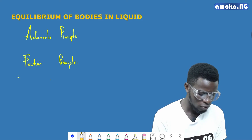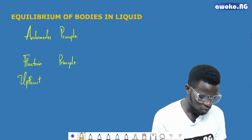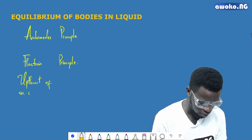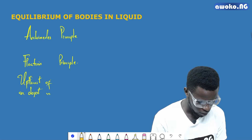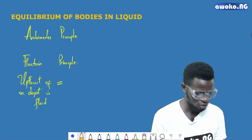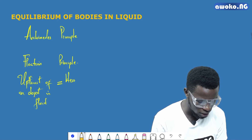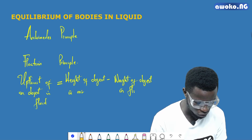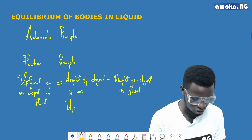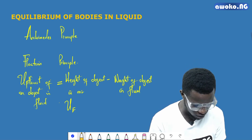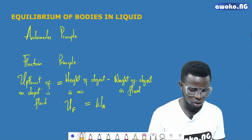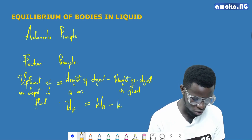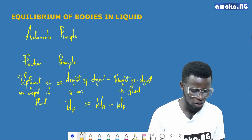The first thing to note is the concept of upthrust. The upthrust of an object in a fluid has the mathematical expression: UF equals the weight of the object in air minus the weight of the object in the fluid. So mathematically, UF, which is the upthrust of the object in the fluid, is equal to WA minus WF. This is how to calculate the upthrust of an object in a fluid.